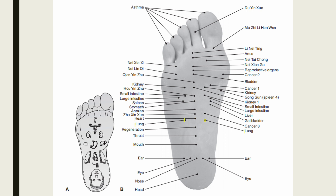The lung point is located 0.4 unit distal to the regeneration point and 1 unit medial and lateral to the midline, at 4.6 units from the heel. Indications of the lung point include cough, shortness of breath, and chest pain.